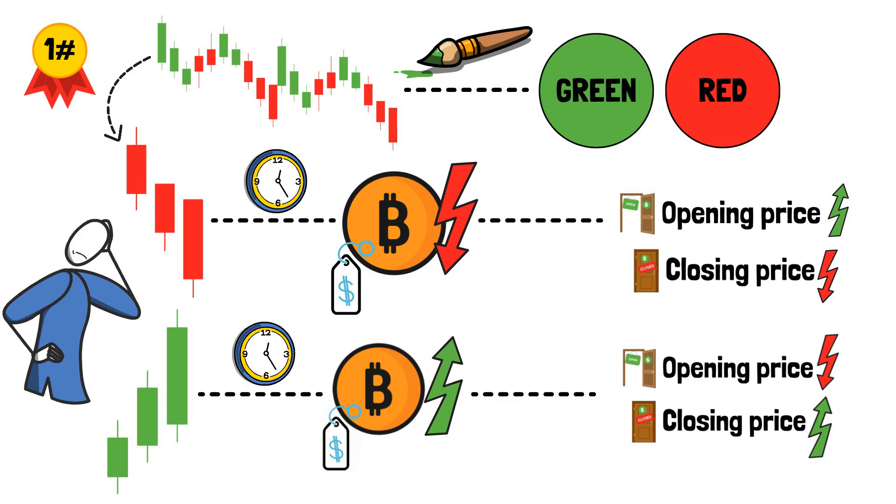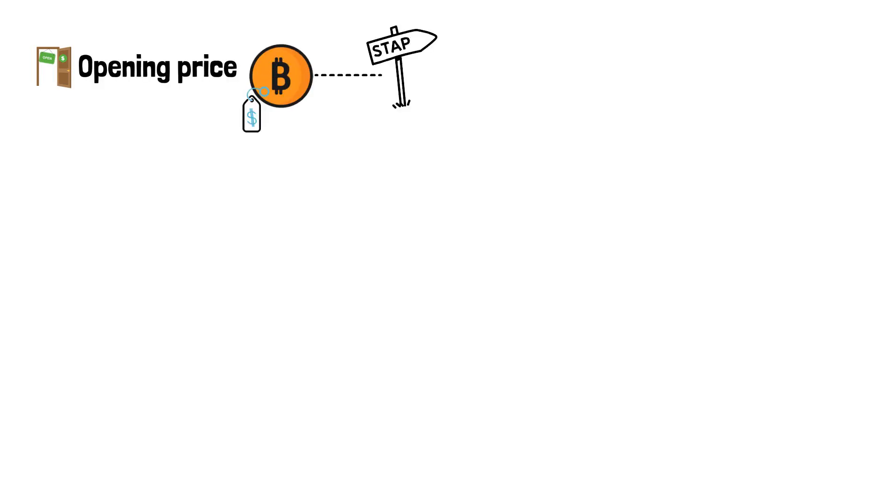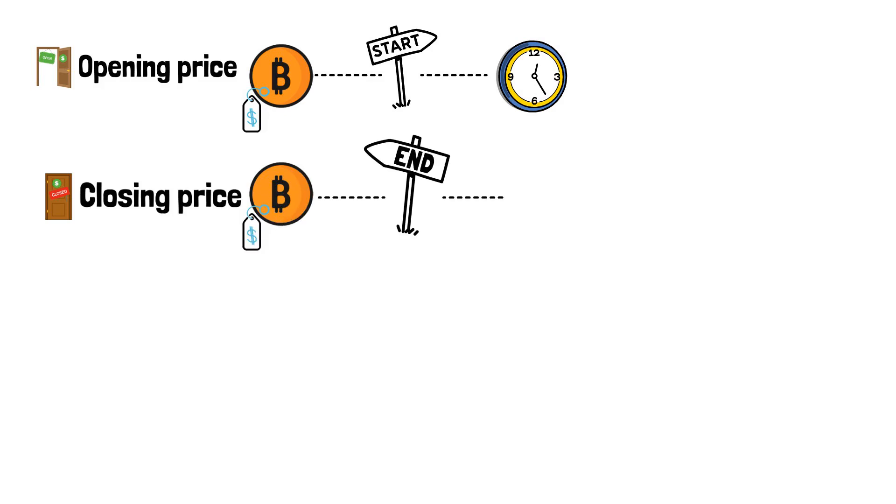To comprehend this better, it's crucial to have a clear understanding of what opening and closing prices are. The opening price is the price of a coin at the start of a particular time period. The closing price, naturally, is the price of the coin at the end of that time period.